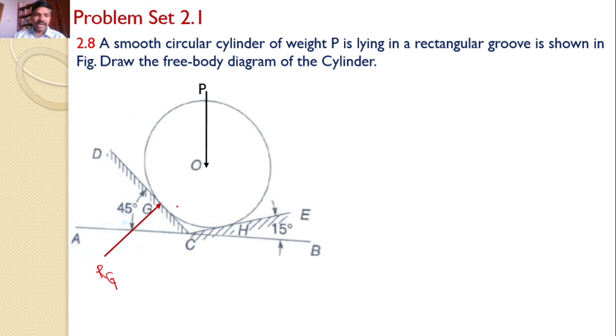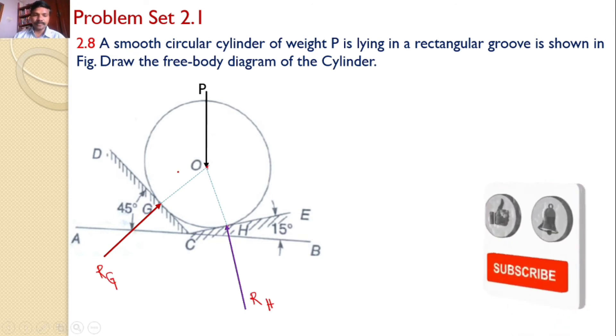Similarly, the cylinder is supported at H. This fixed support will introduce a reaction at H perpendicular to CE and towards the cylinder, R_H. If you extend RG, it must coincide with the force at O, and if you extend R_H, it must intersect at point O because this is a concurrent system. The cylinder is subjected to three forces: P acts vertically downward, RG perpendicular to DC, and R_H perpendicular to CE.